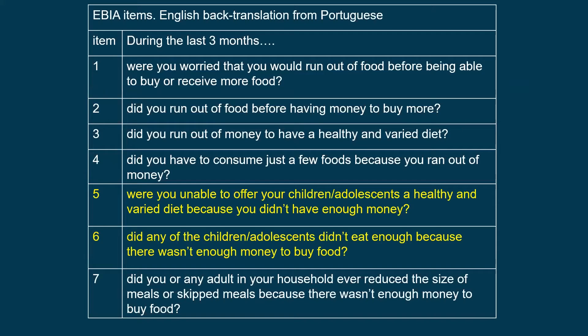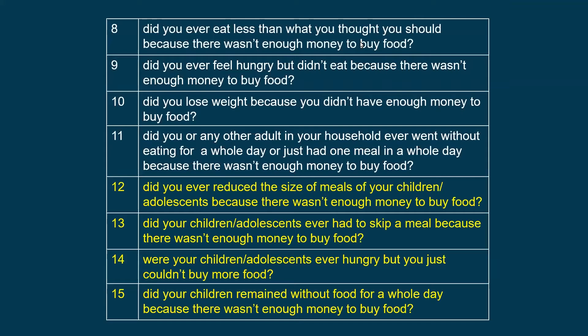The EVIA looks very similar to the U.S. Household Food Security Survey module, asking questions about running out of food in terms of quantity and quality. It asks a respondent for the family if they have been worried about running out of food, everything in the context of poverty. Questions are asked in the context of both adults in the household as well as children.